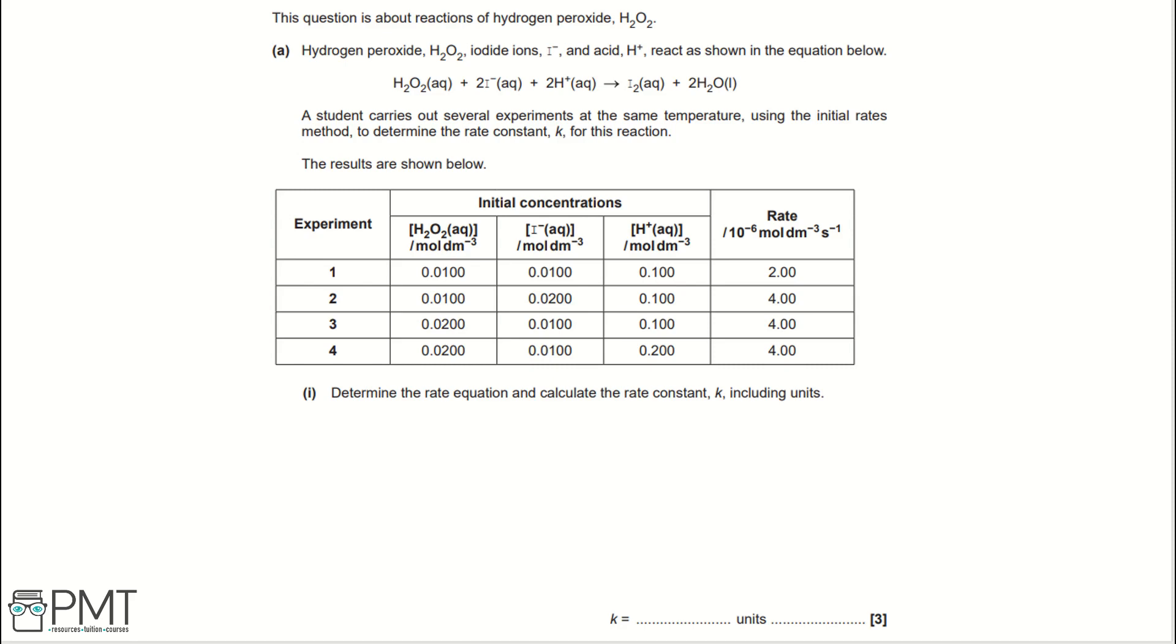Part I, determine the rate equation and calculate the rate constant K using units. To start, let's write a general rate equation for this reaction. A general rate equation for this reaction will be rate equals K and then each of our reagents: H2O2, I-, and H+.